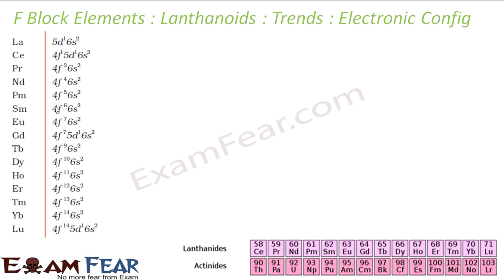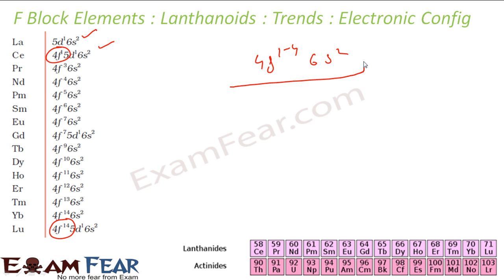Looking at the electronic configurations overall: the F orbitals are filled with electrons ranging from 1 to 14 electrons. The 6s² is common for all lanthanides, so the general configuration is 4f¹⁻¹⁴ 6s². The d orbital generally has 0 to 1 electron at most.